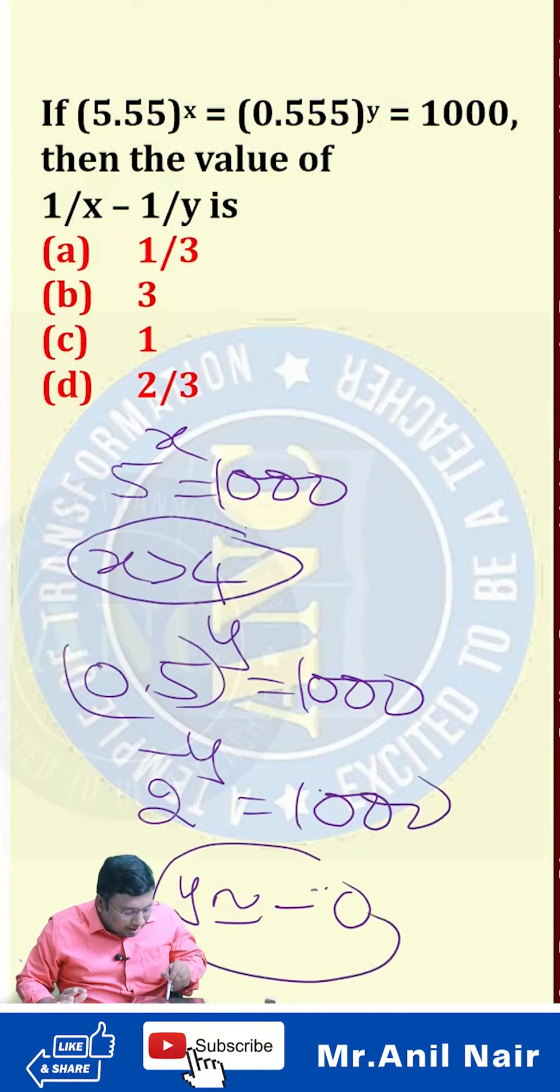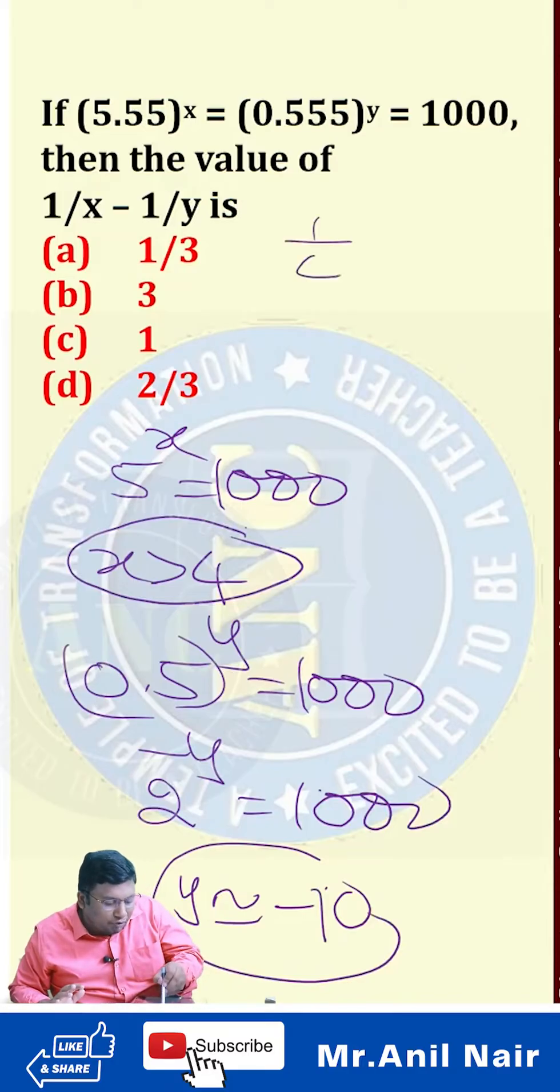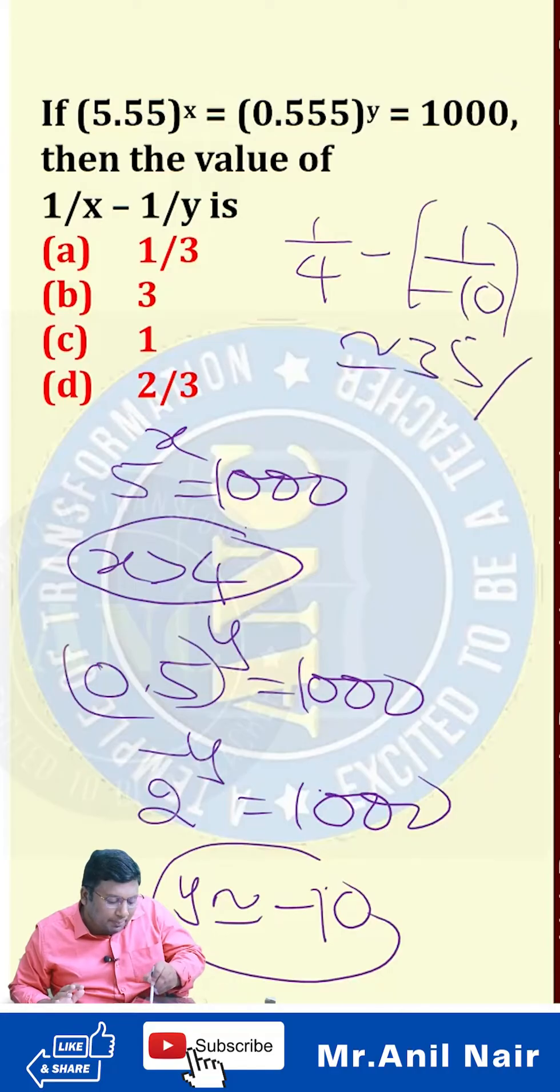x is around 4. y is around minus 10. 1 by 4 minus 1 by minus 10. Answer is around 35 percentage.